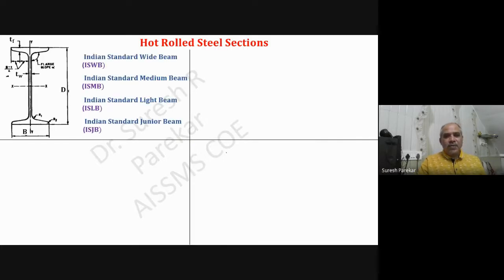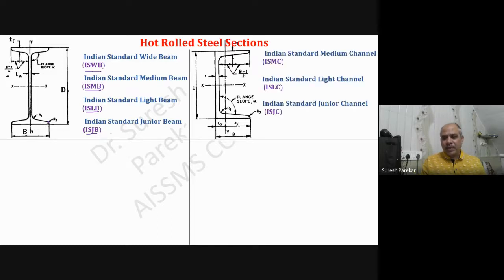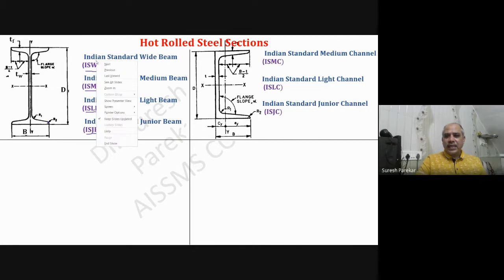For hot rolled steel sections, we have the I-section - the Indian Standard Wide Beam (ISWB), Indian Standard Medium Beam, Indian Standard Light Beam, and Indian Standard Junior Beam. Dimensions shown include r1 - root radius at the junction - and r2 for the flange. Similarly we have ISMC - Indian Standard Medium Channel - and ISLC - Indian Standard Light Channel.